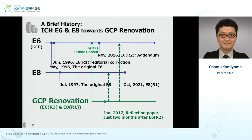The agreement on GCP ICH E6 in 1996 raised the foundation for the international interoperability of clinical trial data that is still in place today. Just one month after the initial agreement on GCP, a minor editorial amendment was made, which was designated E6R1, and was implemented and used for the next 20 years. In 1997, the year after the original GCP, the original E8, General Considerations for Clinical Trials, was agreed.